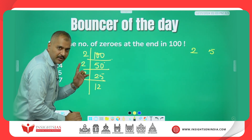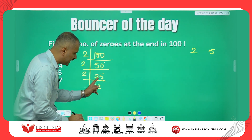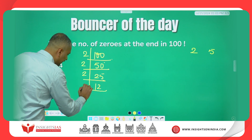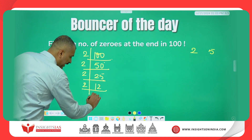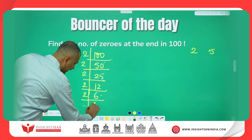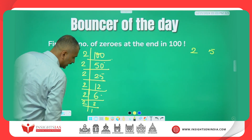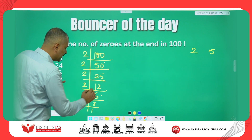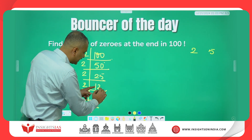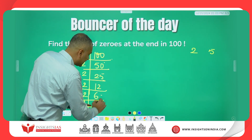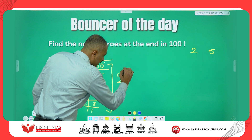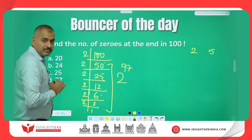Ignore the remainder. If you are getting a remainder — the remainder is 1 — but I am ignoring it. Again divide by 2: 6 times, then 3 times, then 1 time. So totally this is 50 + 25 = 75, then 87, 90, 96, and 97. The power of 2 is 97 in number.